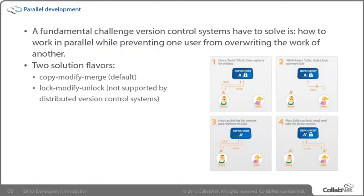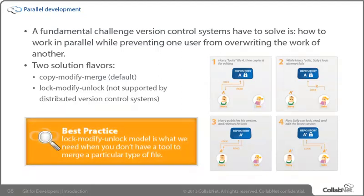That said, we do have to be aware of where locking would have applied and do the best we can. Best practices would say the lock-modify-unlock model is what we need when we don't have a tool to merge a particular type of file. In that case, we could either clobber somebody else's changes, or face a productivity problem where two people are working, the first one wins, and the second must either abandon their work or manually reapply the changes. So while locking can't be supported, we do have to consider that issue when developing objects that make sense for locking.